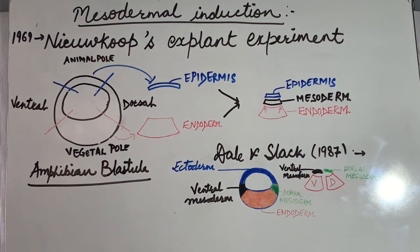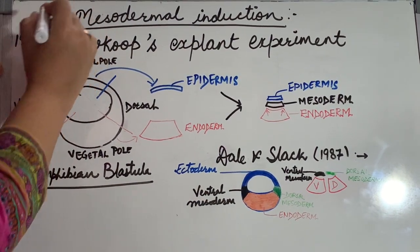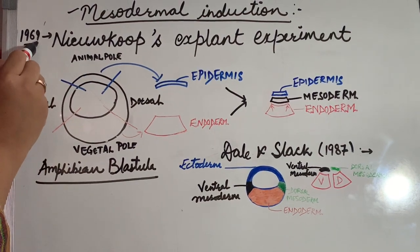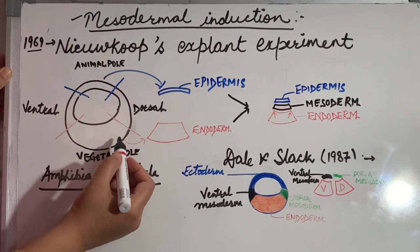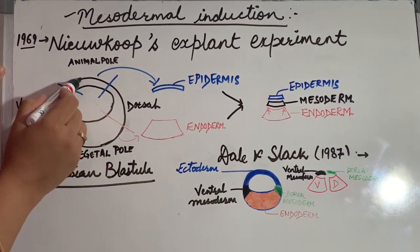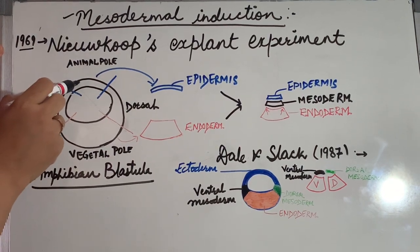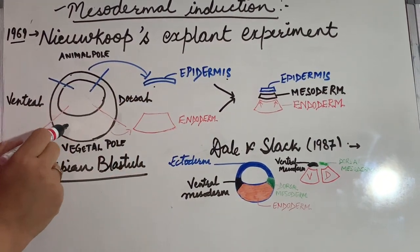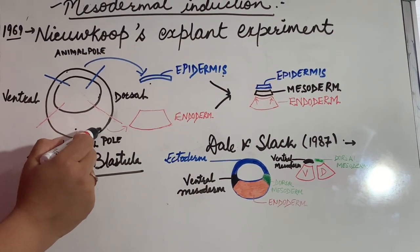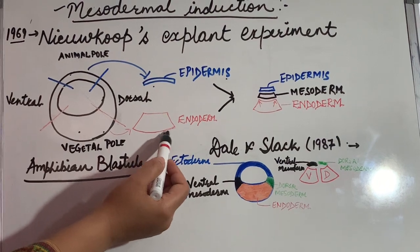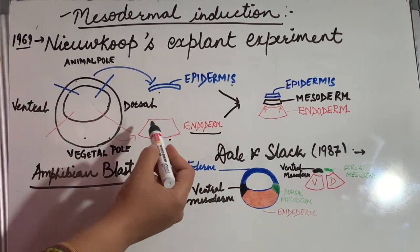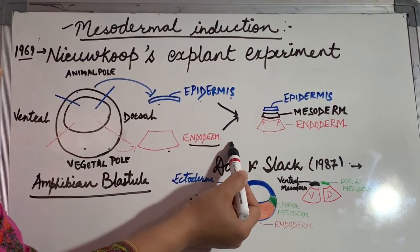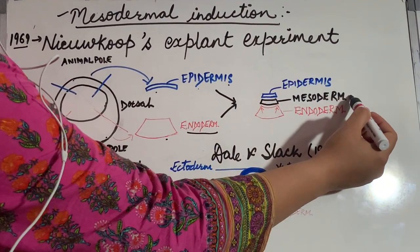Now we will discuss some examples of induction. The first one is mesodermal induction. An experiment was conducted by Nieuwkoop in 1969 on the amphibian blastula. They took the blastomeres or tissue from the animal pole of the blastula and cultured them separately — they got epidermal cells or ectoderm. When they cultured the cells or explant from the vegetal pole individually, they got the endoderm. In the next step they cultured these two cells together, and when they cultured epidermal and endodermal cells together, they got another layer in between them — that is the mesoderm.